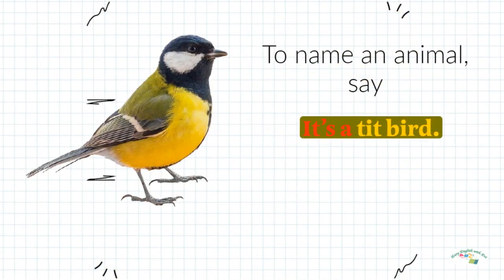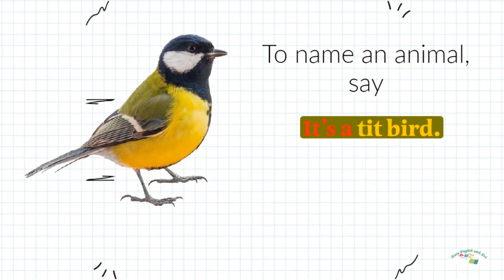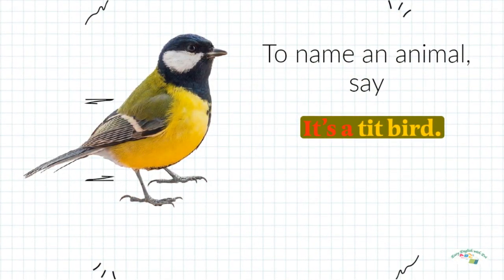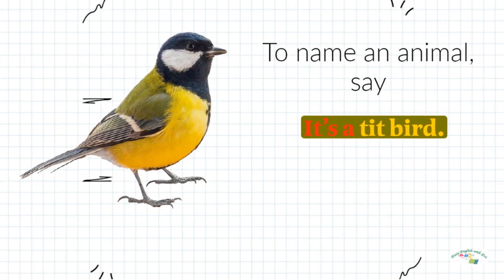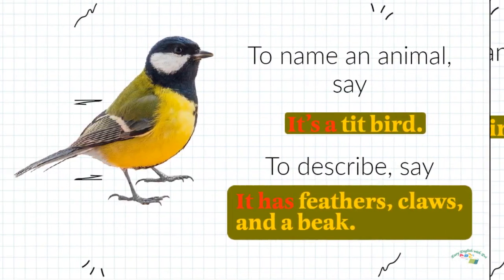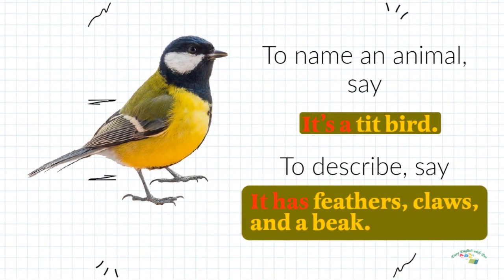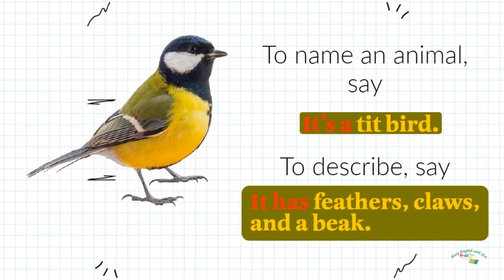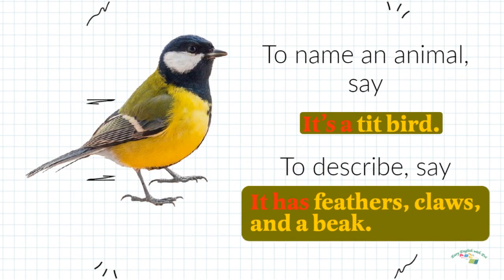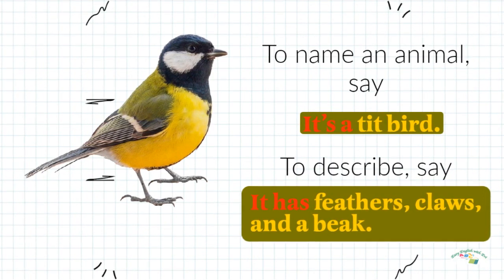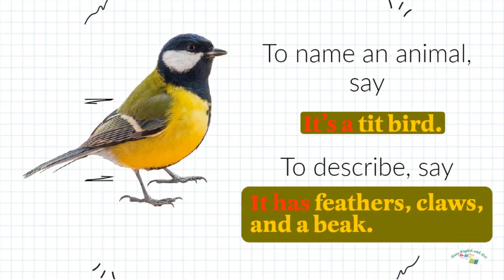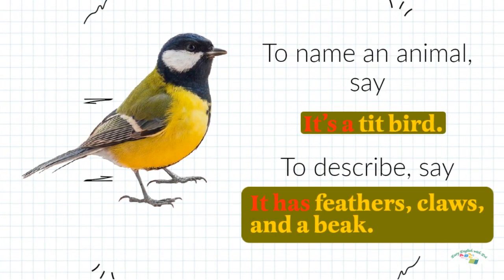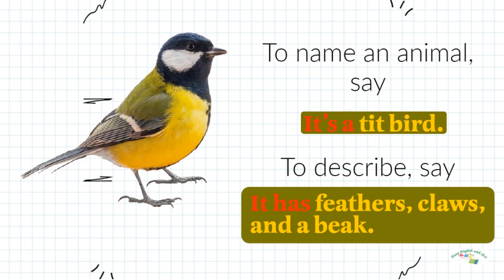To name an animal, say: it's a bird. To describe, say: it has feathers, claws and a beak.